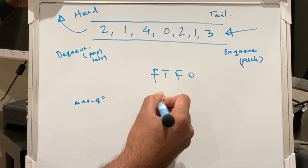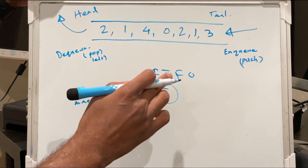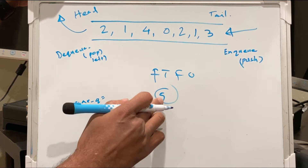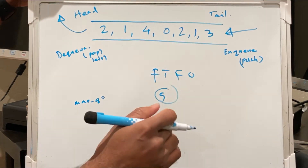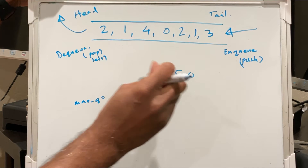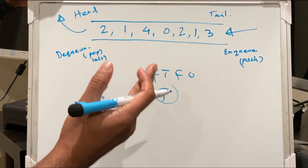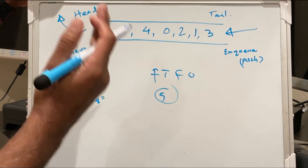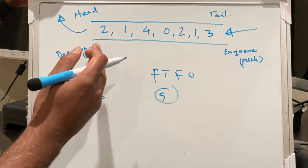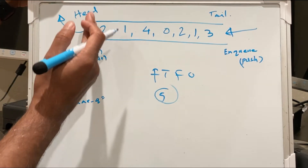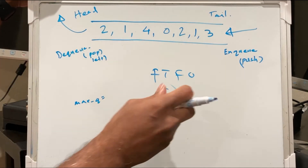So for example, if there is another number we want to enqueue, it will go on the tail side. And if we want to dequeue something — we can call it pop left — then the first element from the left will get out. In that case, 2 will get out.